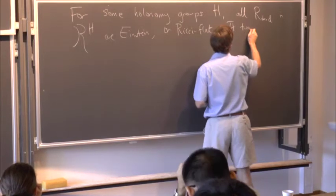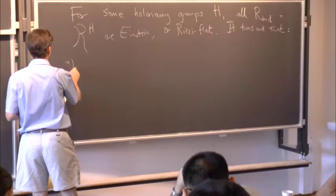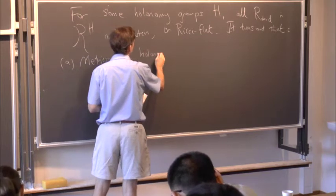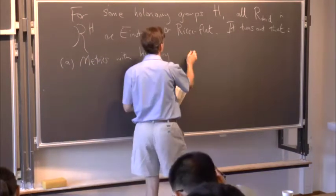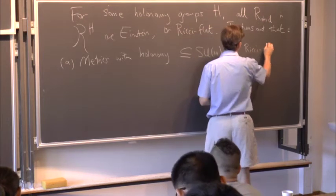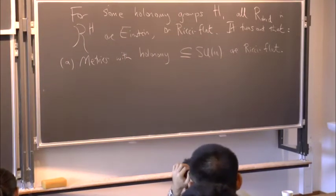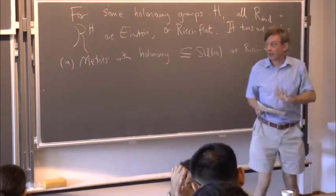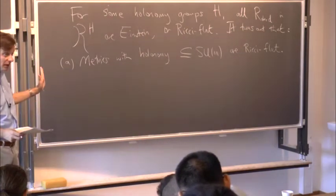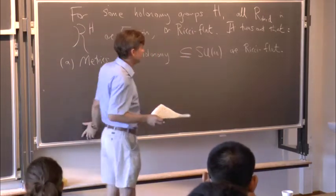Firstly, metrics with holonomy contained in SU(M) are Ricci flat. So I'll be explaining this in rather more detail later when we get into the Kähler holonomy groups. As an aside, when you're talking about things with holonomy, most statements you make are true not just for a metric with a given holonomy group, but also for a metric whose holonomy group is a subgroup of that group. So you get used to writing holonomy contained in something if you want to make more general statements.